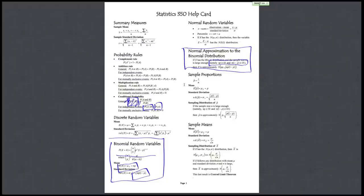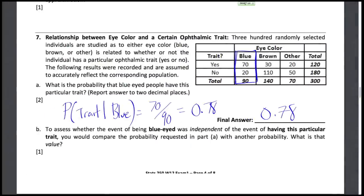So probability of having the trait given blue eyes should be equal to just the probability of having the trait regardless of their eye color. So we now just want to compare this to the probability of having the trait. So we drop the condition. We just look at overall the probability of having the trait.